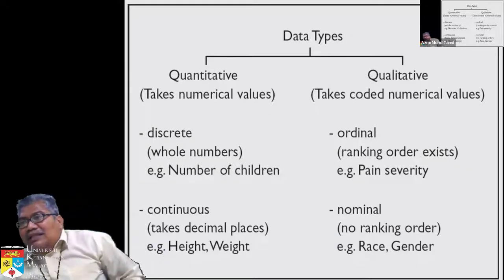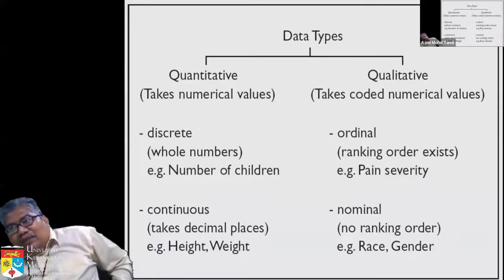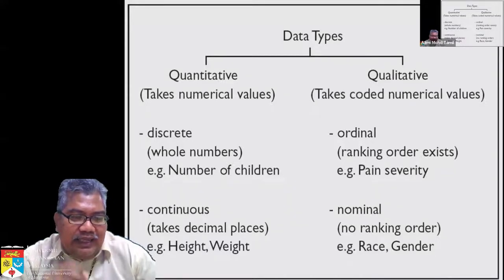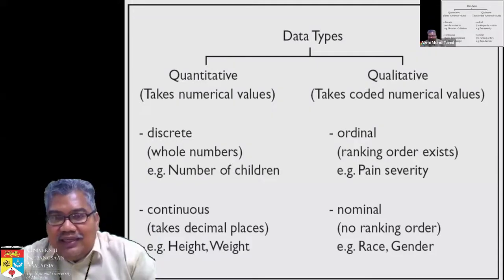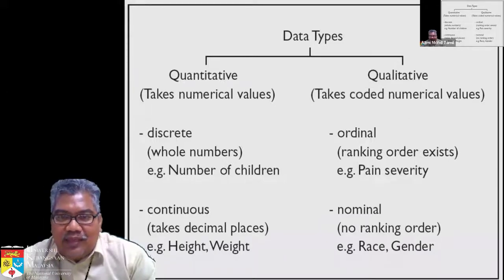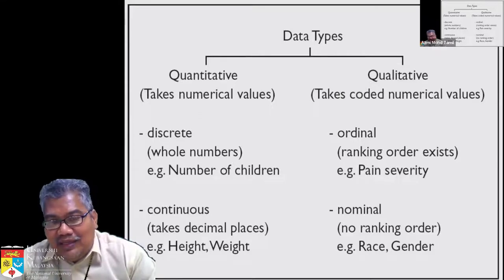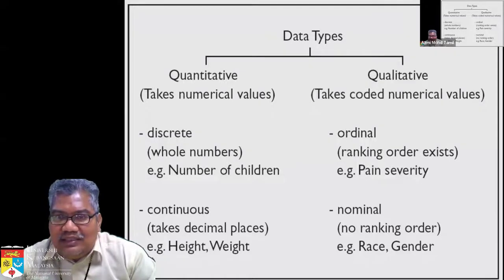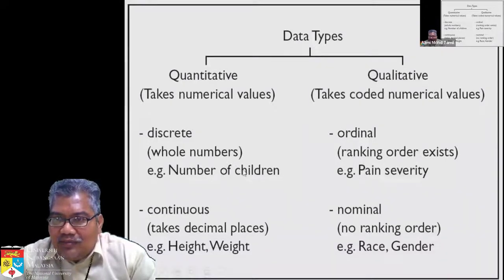The other type is nominal data. Nominal data means there is no ranking, no order — for example, male and female. There is no one above or below the other. However in the eyes of the Malaysian court, there is a distinction: if the father is Malaysian, children are automatically Malaysian, but if the mother is Malaysian and married overseas, it is not automatic — which is why there are pending court cases about children's citizenship.